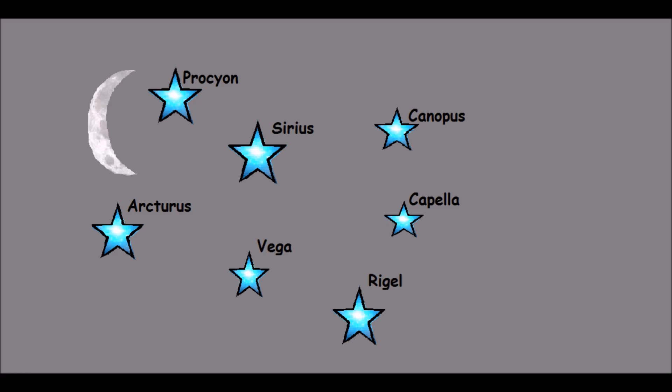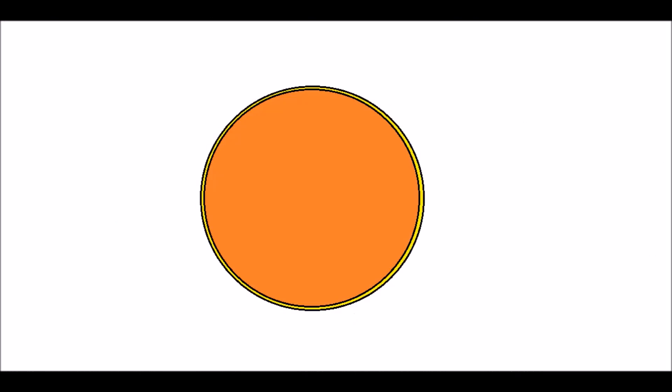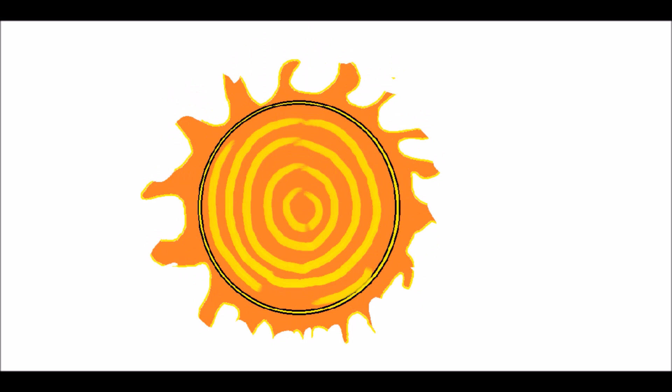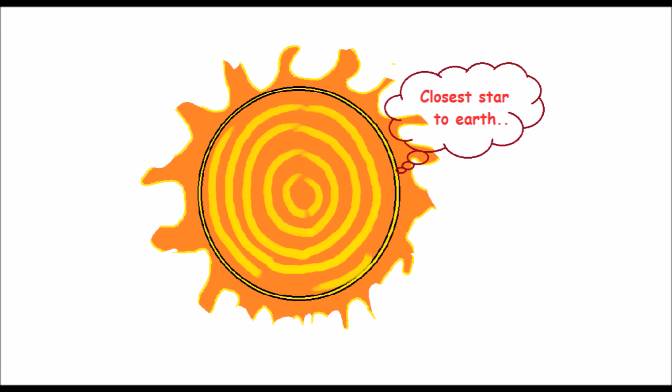We have seen lots of stars at night. Did you know there is one star that we can see during the day? That star is our Sun. It is a yellow, medium-sized dwarf star. Our Sun is a big ball of hot and glowing gases.